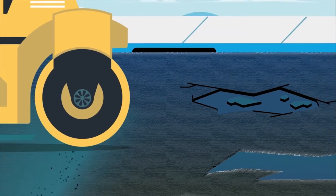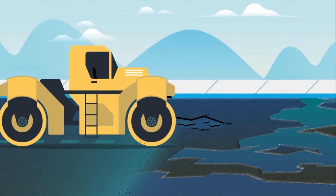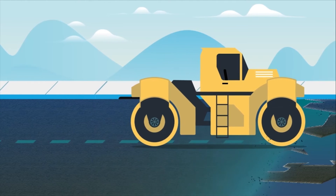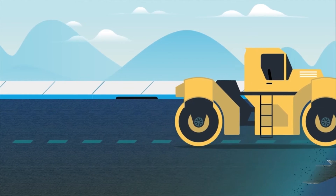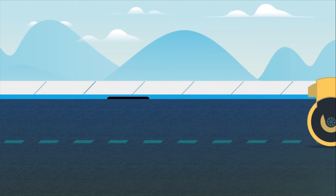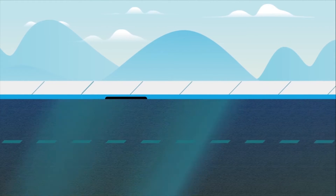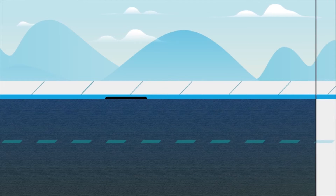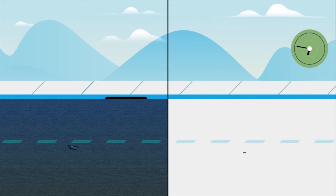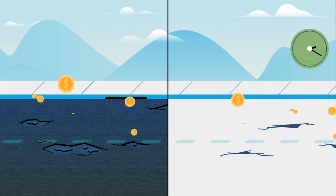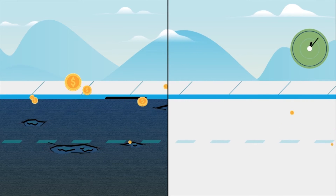To illustrate how lifecycle costing works, let's consider an example of a road project. The government of Rivertopia is considering two options for a new road: one that uses traditional asphalt pavement, and another that uses alternative concrete pavement that's more expensive but longer-lasting and requires less maintenance.